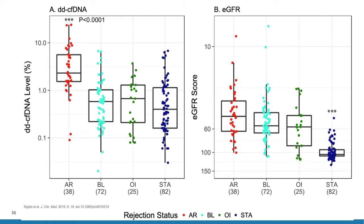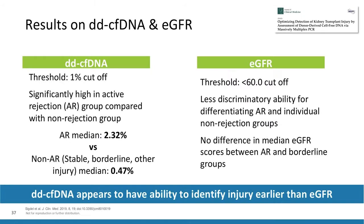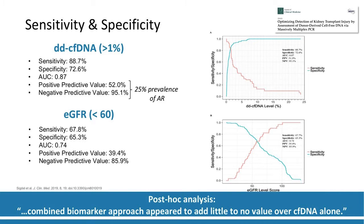In the acute rejection group, the median donor-derived cell-free DNA was 2.32%, compared to only 0.47% in the non-acute rejection group. GFR provided less ability to distinguish acute rejection from borderline or other injury. The conclusion was that donor-derived cell-free DNA has the ability to identify injury earlier than eGFR. Specificity was 72.6%, sensitivity 88.7%, area under the curve 0.87, PPV 52%, and NPV 95% — a quite good negative predictive value. This compares to a GFR less than 60 with sensitivity of only 67%, specificity of 65%, AUC of 0.74, PPV of 39%, and NPV of 85%. Donor-derived cell-free DNA was clearly superior to GFR for detecting rejection.